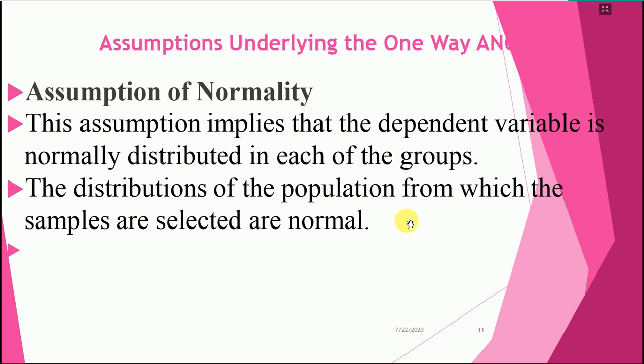The second assumption is normality. This assumption implies that the dependent variable is normally distributed in each of the groups. The distributions of the populations from which the samples are selected must be normal. You must remember normality.